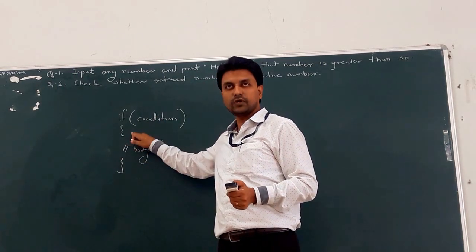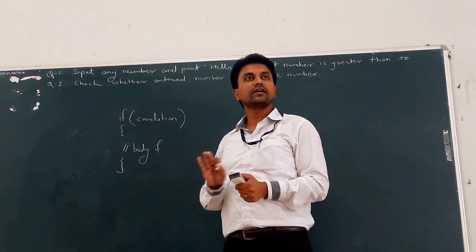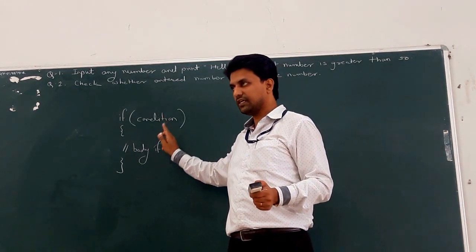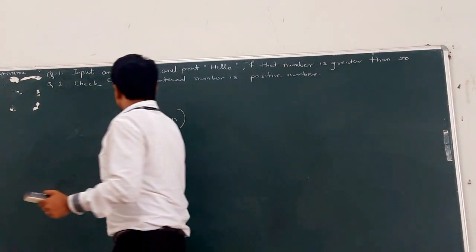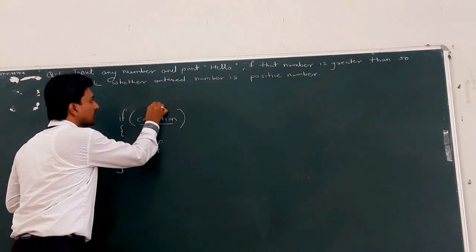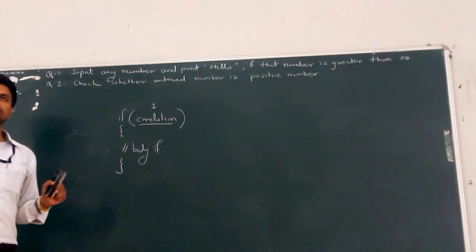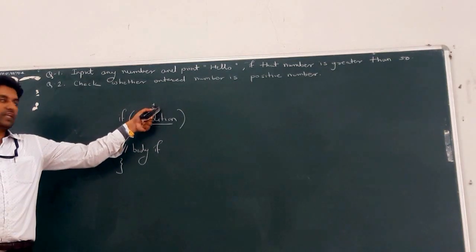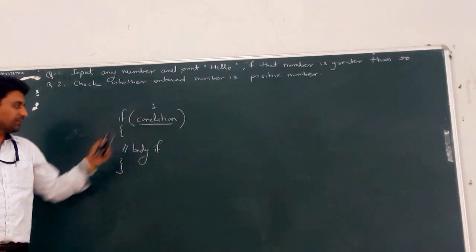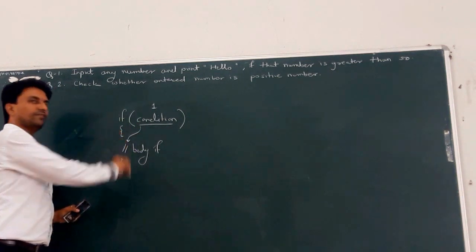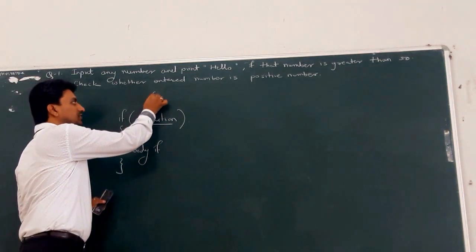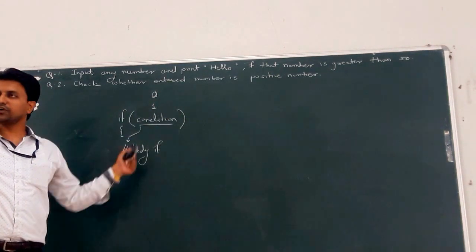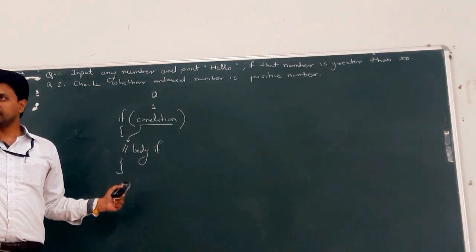If the condition is true, execute the body; otherwise the body is not executed if the condition is false. At execution time, the runtime environment puts 1 if the condition is true — that means entry to the body of if. Otherwise, if the condition is false, it is treated as 0 and there is no entry to the body of the if statement.